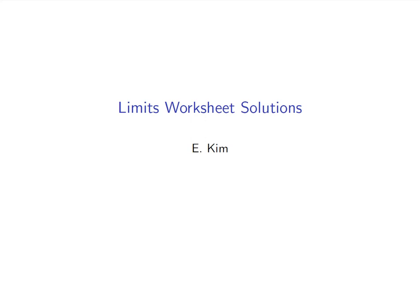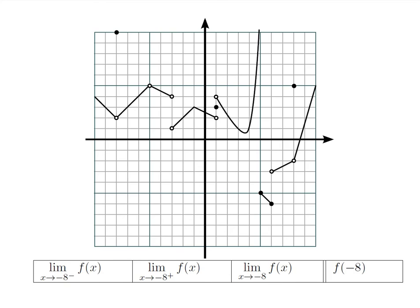This video is going to go through the solutions and how you should think about the second activity limits worksheet. The first row talks about the x-value of negative 8, which you'll see marked here. We should find where x is equal to negative 8 first — that's right here.